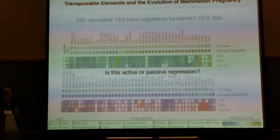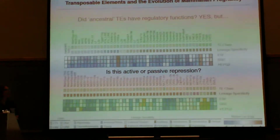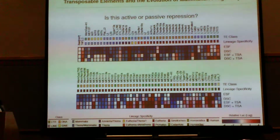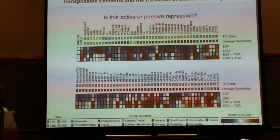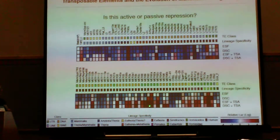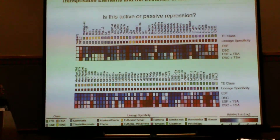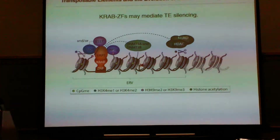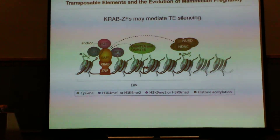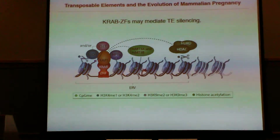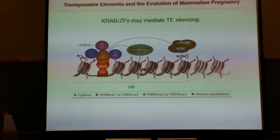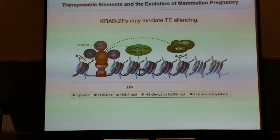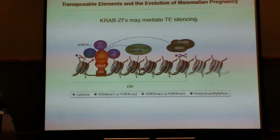To test this, I used the HDAC1 and 2 inhibitor trichostatin A on both stromal and decidual cells. When I do this, we see a relief of repression — a lot more red squares than before. This supports the current model for transposable element silencing, where a KRAB zinc finger targets the transposable element in the genome, brings in the KAP1 protein, which mediates other repression complexes including DNA methyltransferases and the NuRD-HDAC repression complex — which is what I likely inhibited with trichostatin A.